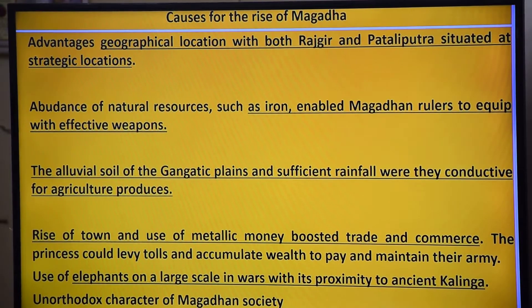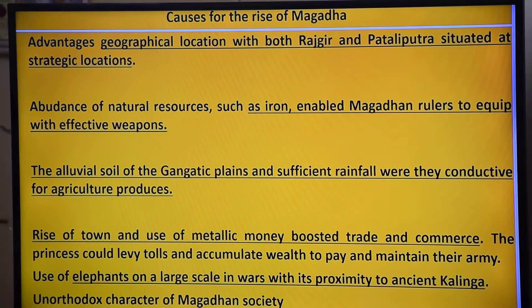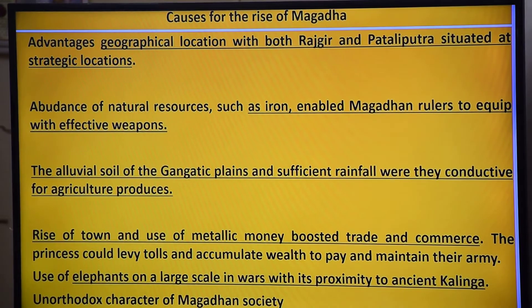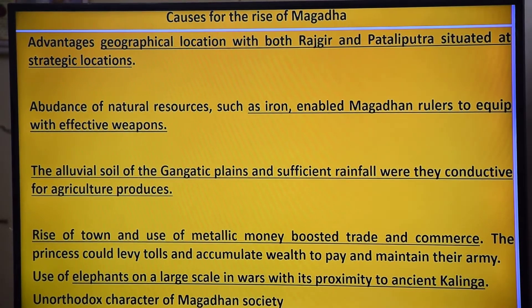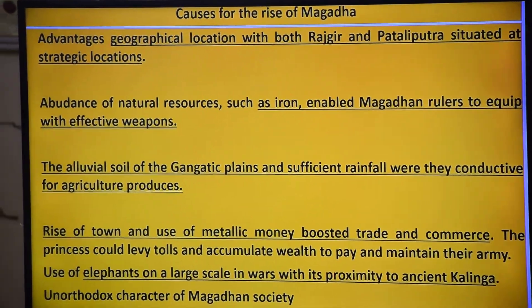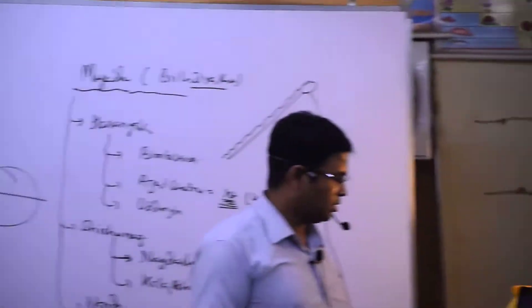The use of elephants on a large scale in wars, along with proximity to ancient Kalinga and the unorthodox character of Magadhan society, were additional factors. These are the main reasons why Magadha kept rising in power.